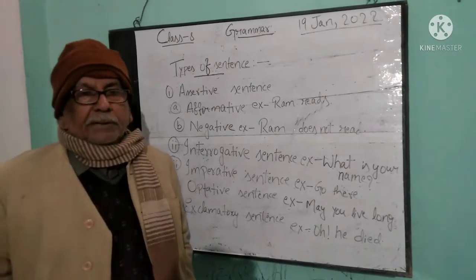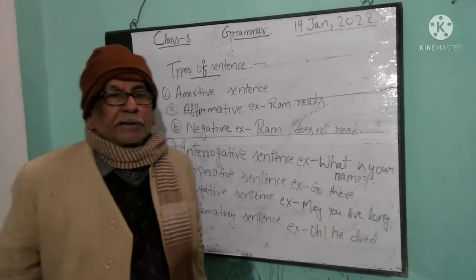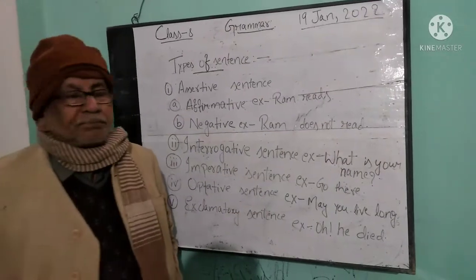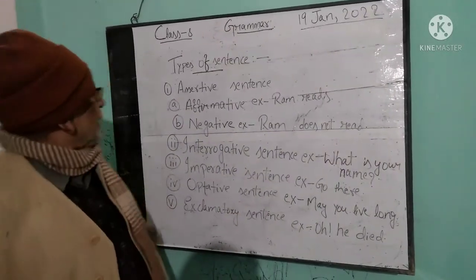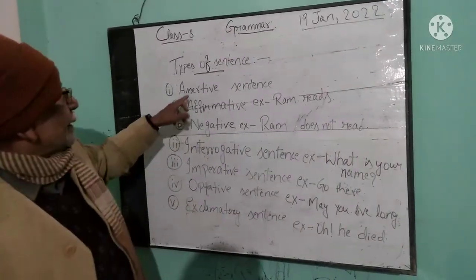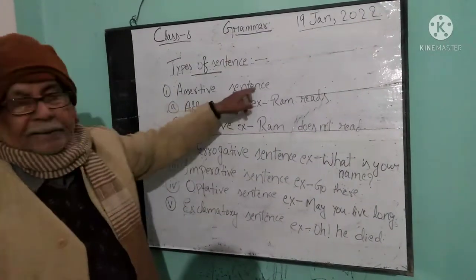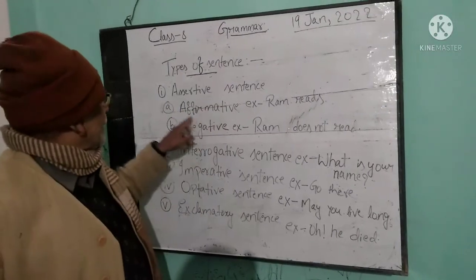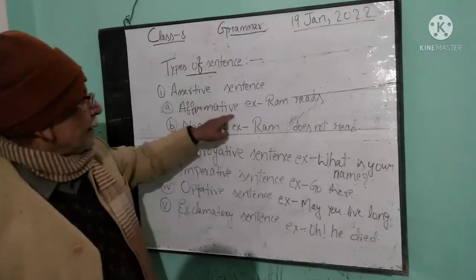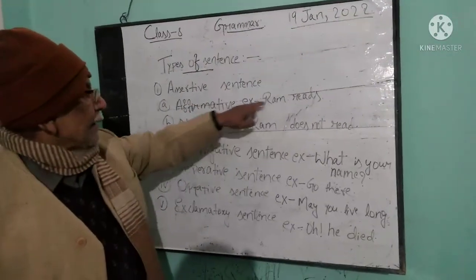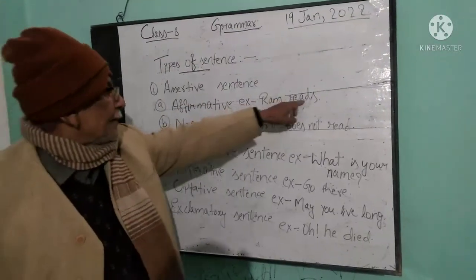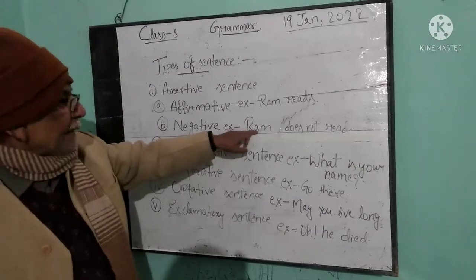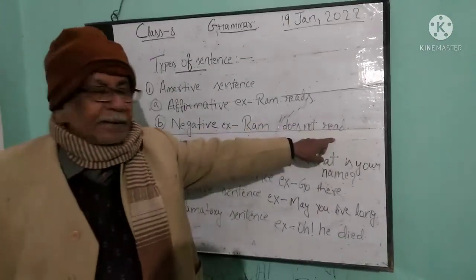First I am going to teach you types of sentences. First, assertive sentence, which is divided into two parts: affirmative — 'Ram reads'; and negative — 'Ram does not read.'